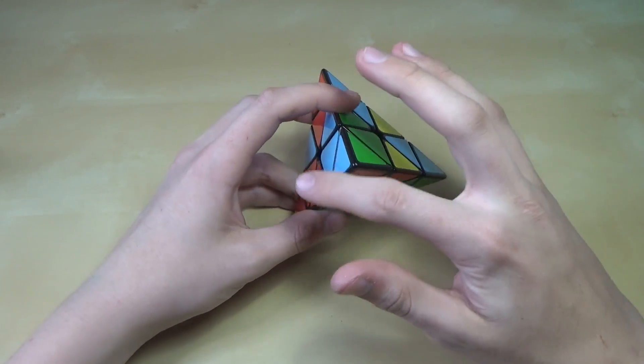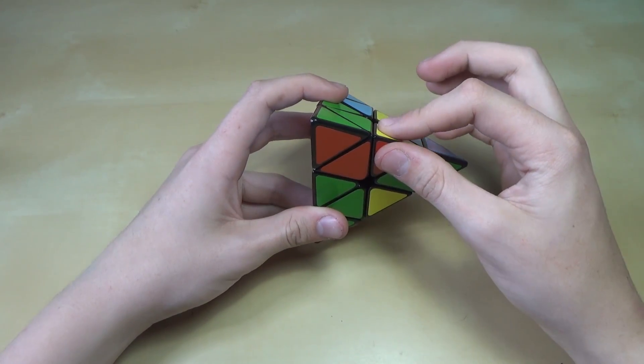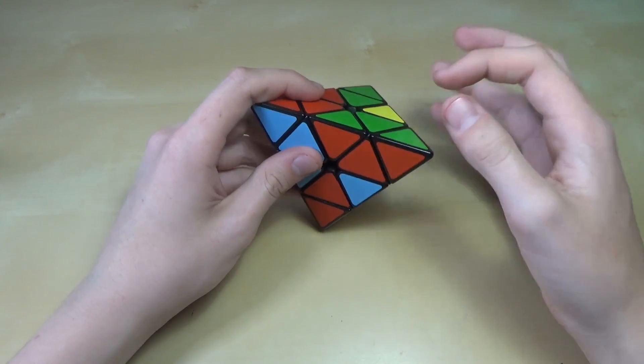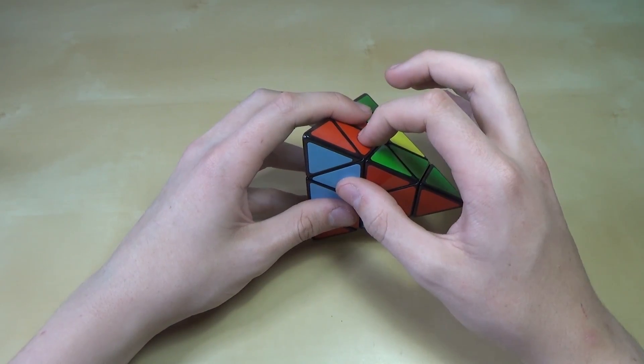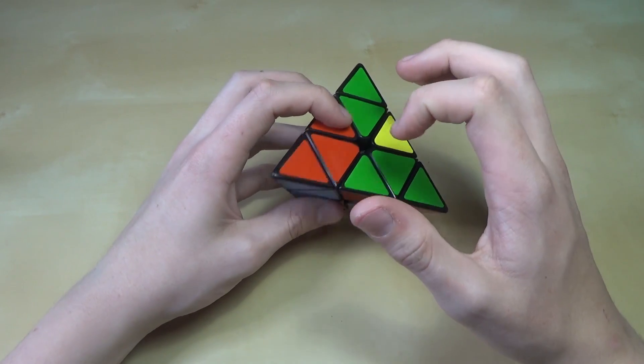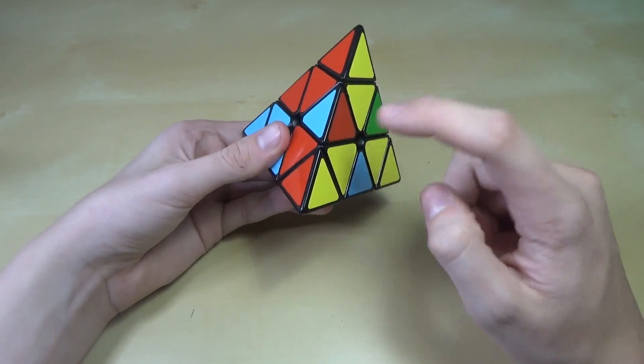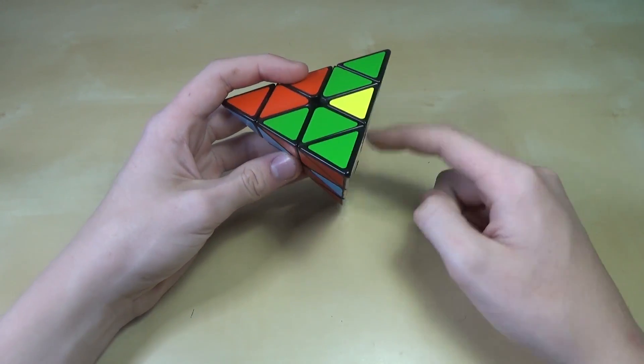And then from here, you see this is the layer that we were working on. This is a piece that is just a random piece. This is a piece that you set up earlier. What you'll do is find the piece that needs to go in this hole. In this case, the red and blue piece, which is down here.